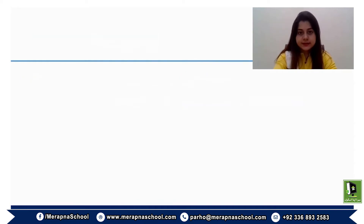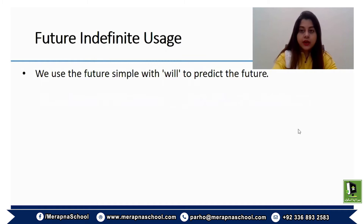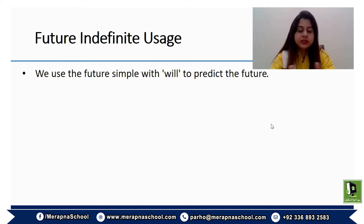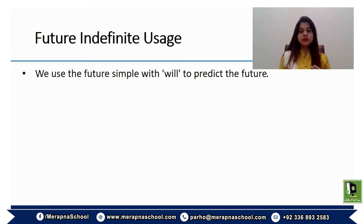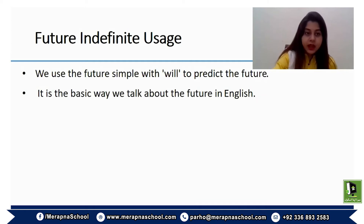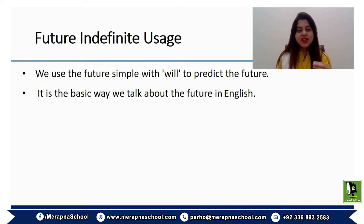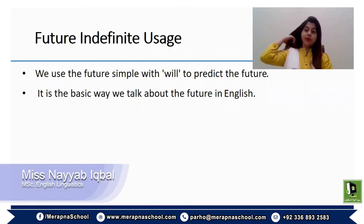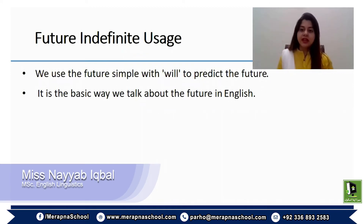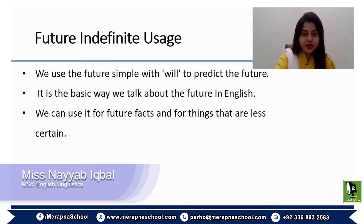The very basic usage of future tense is that we use the auxiliary 'will' to predict the future. This is the basic way we talk about the future in English — the most common way of talking about future events or predicting the future in the English language.